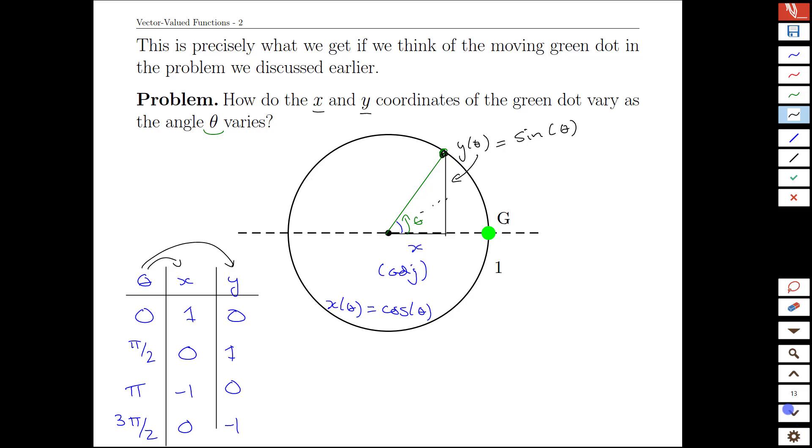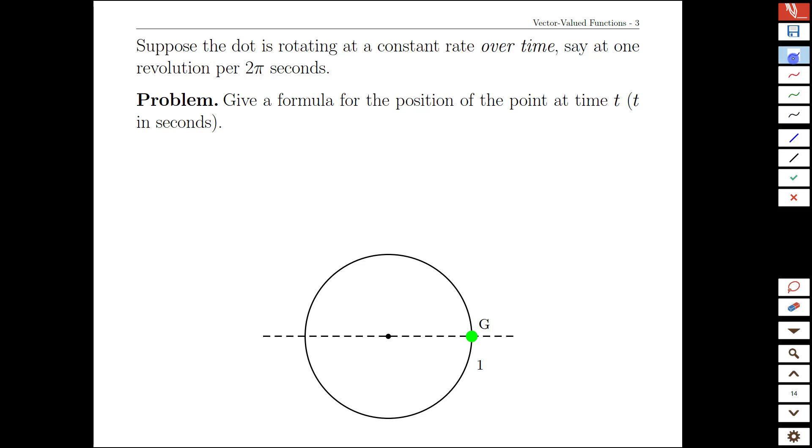Now most of that isn't the way we describe it in a physics context. Usually we would imagine something like this as a particle moving over time. That's going to be our big change. Let's take the easiest possible time frame where we complete one revolution in two pi seconds. Well that tells us that we're exactly mapping our angle onto our time value here.